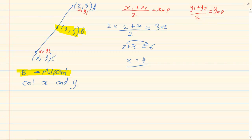Now let's do the same for y. y1 is 5 plus y2 is 3, all over 2, equals the y of the midpoint. So we have 8 over 2 which equals 4. So y midpoint is equal to 4.